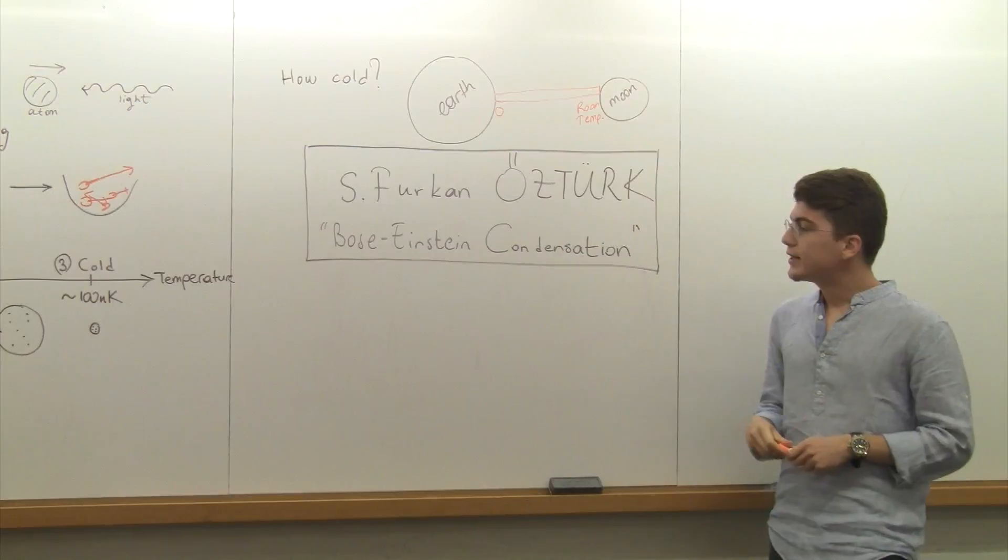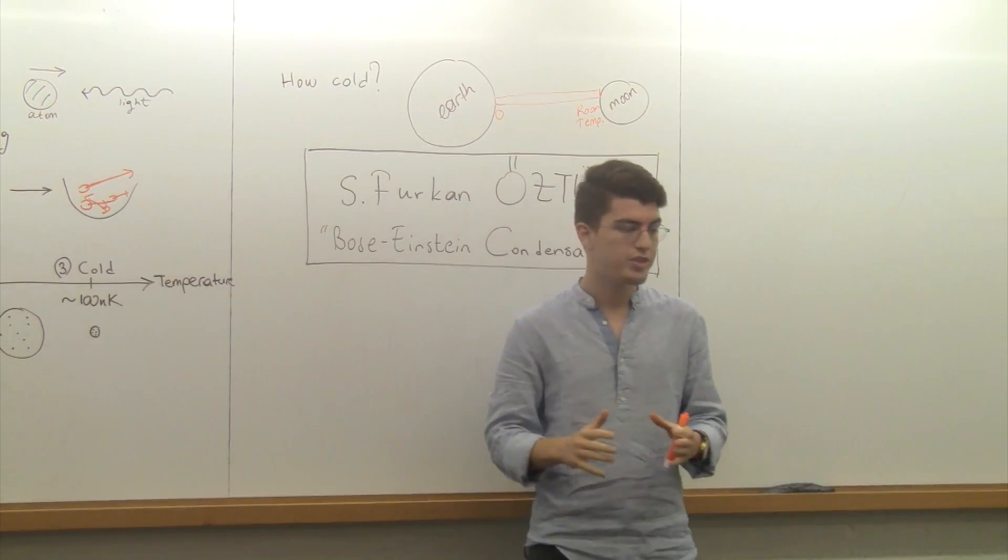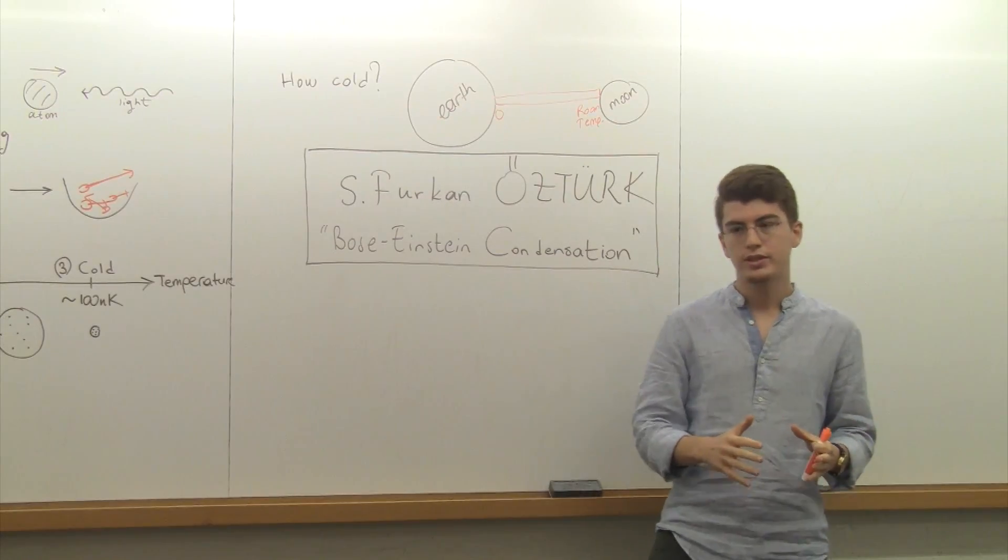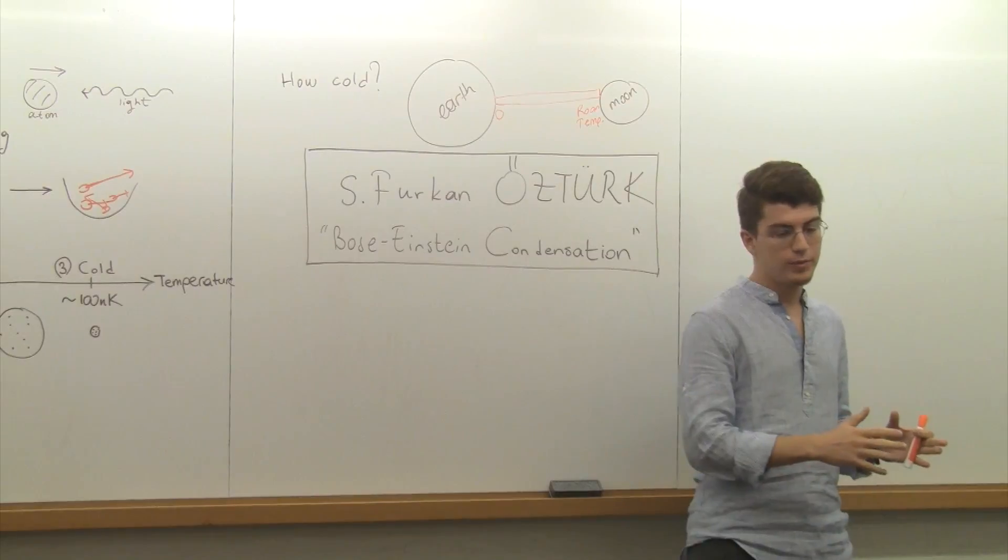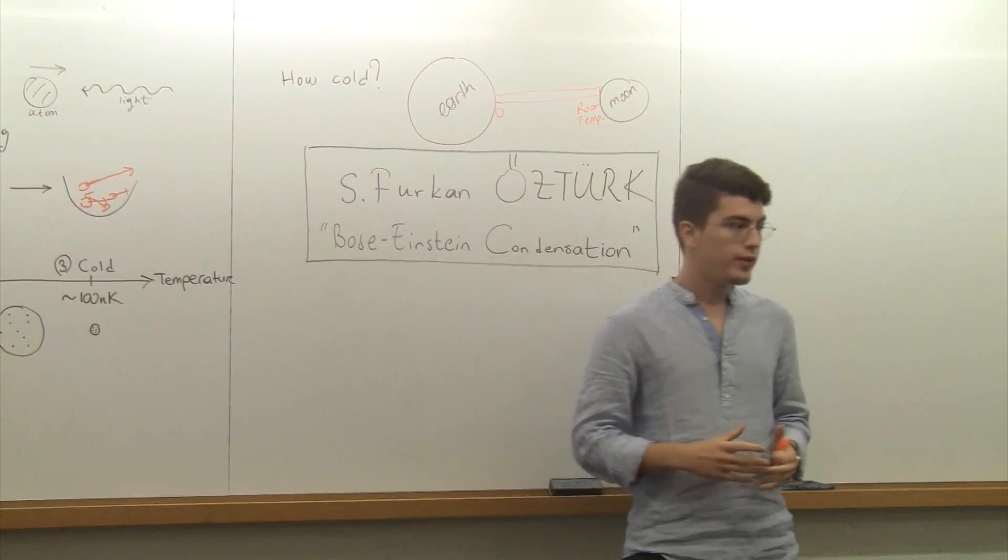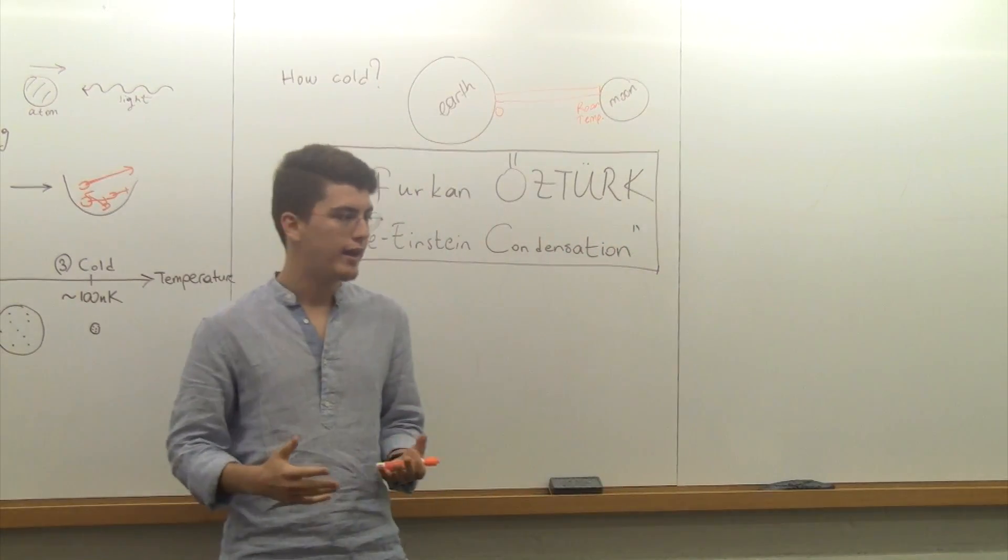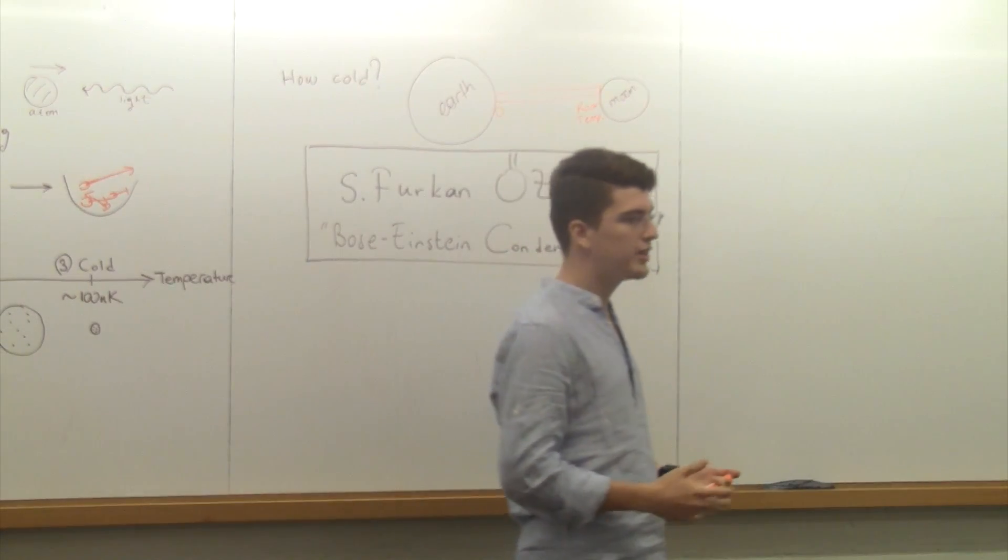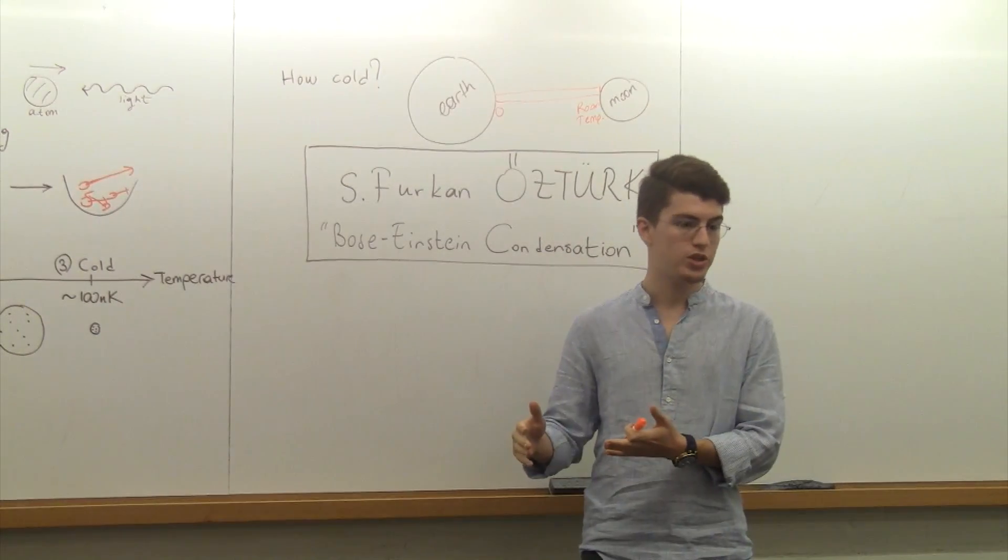It turns out that Bose-Einstein condensate can be turned into a material called a superfluid. A superfluid is just like a superconductor - it's a fluid that flows without resistance, without viscosity. If we just make the fluid atoms charged, then it means that the moving thing - the electricity - flows without dissipation.